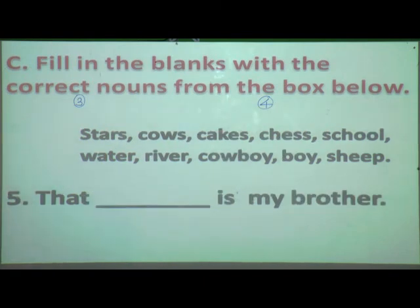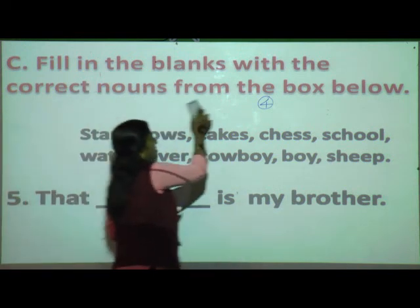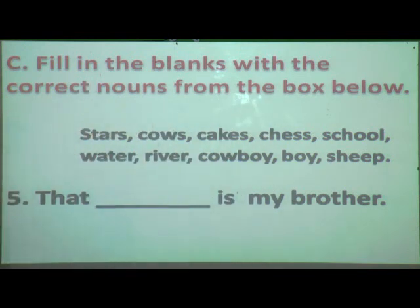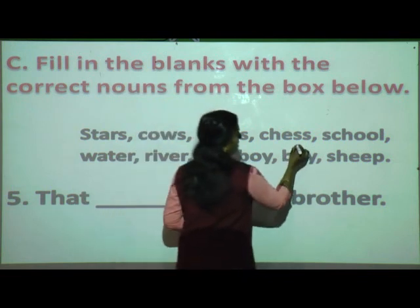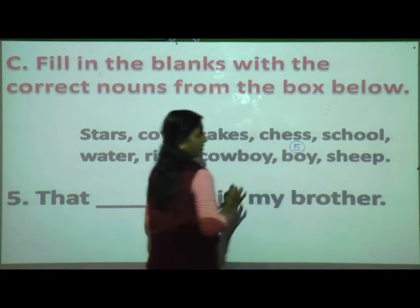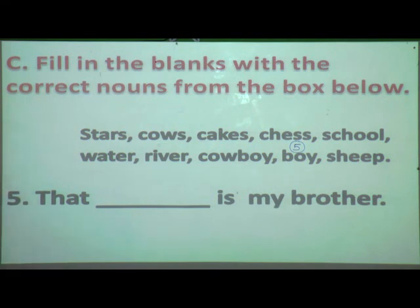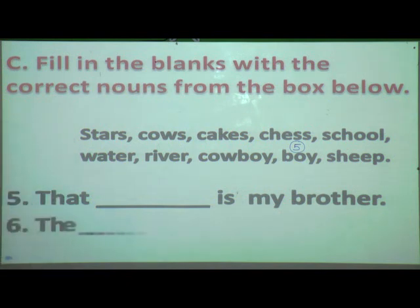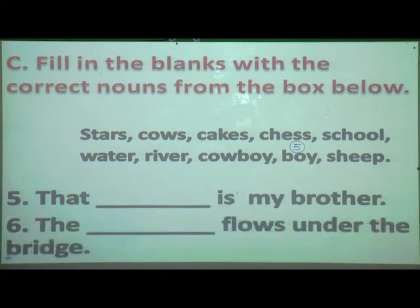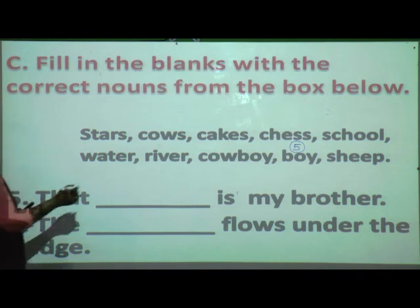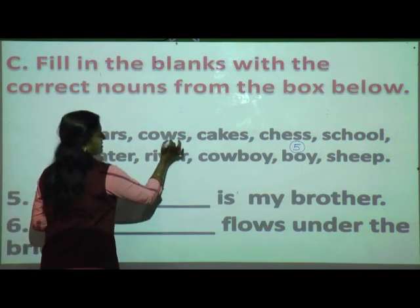Fifth sentence: 'That dash is my brother.' The answer is boy — that boy is my brother. Put number five on boy. Sixth sentence: 'The dash flows under the bridge.' What flows under the bridge? The river. Put number six on river.